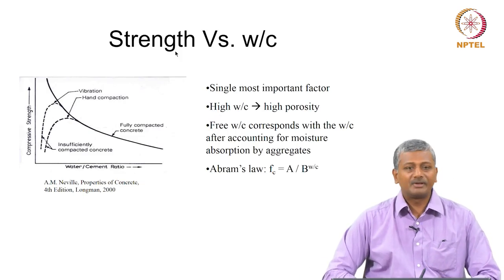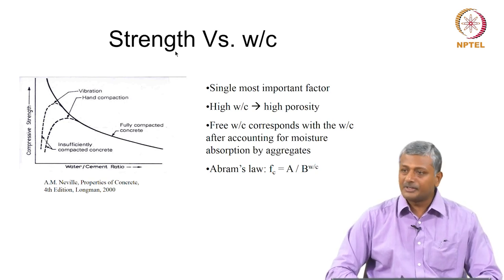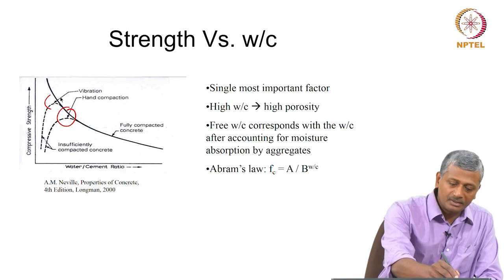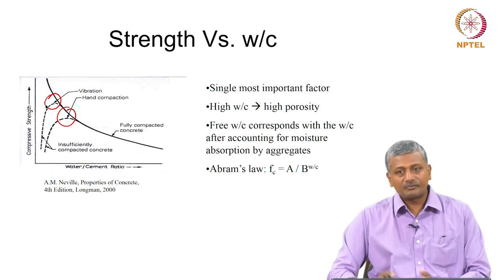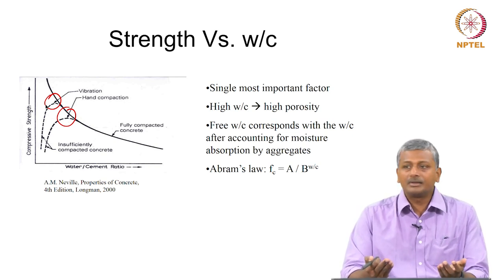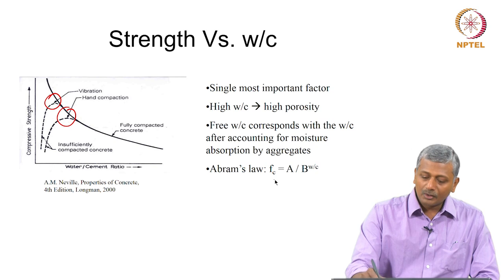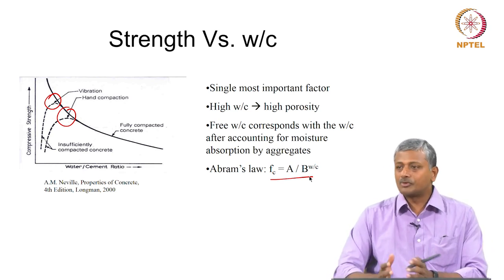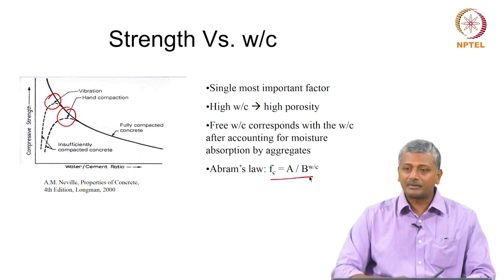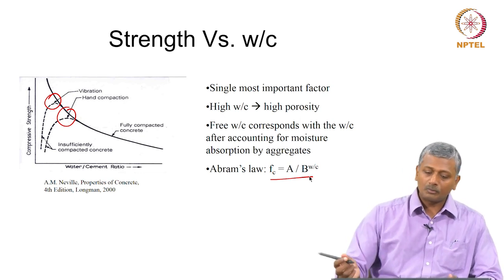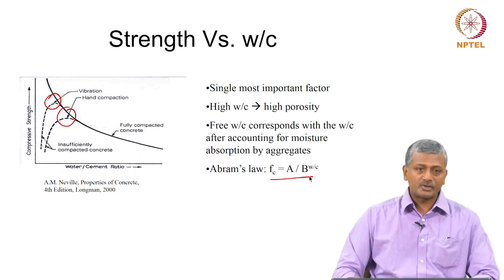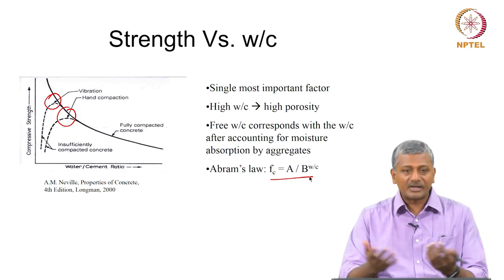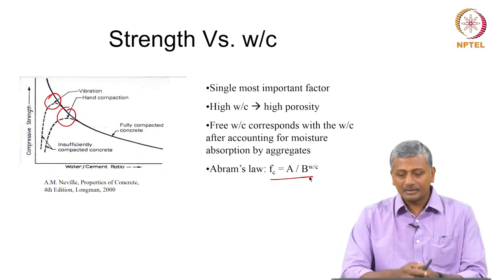As the water-to-cement ratio increases, strength decreases. There are limits to increasing strength through reducing water-cement ratio, because compaction becomes difficult at very low ratios. The relationship between strength and water-to-cement ratio is described by Abrams' law, though the exact power relationship can vary. The key principle is: as water-to-cement ratio increases, strength decreases.